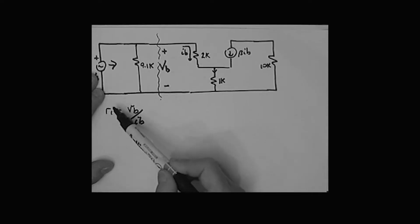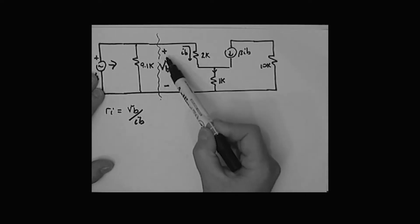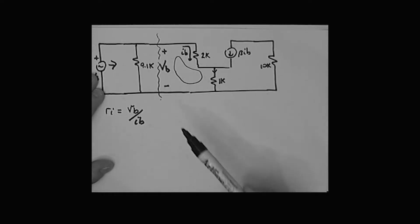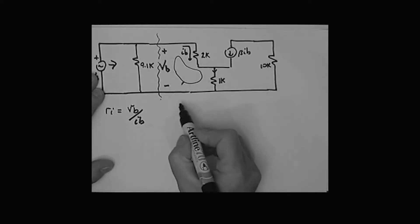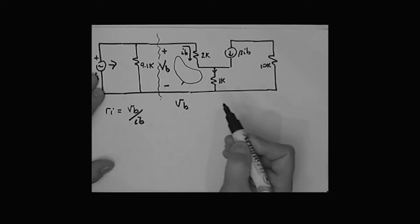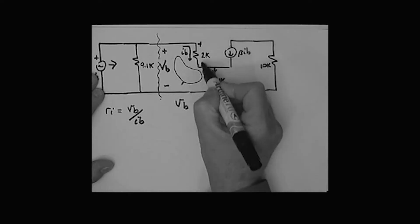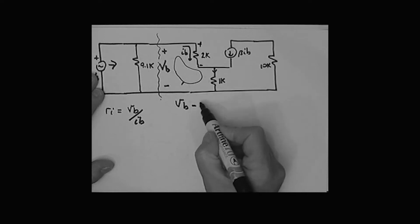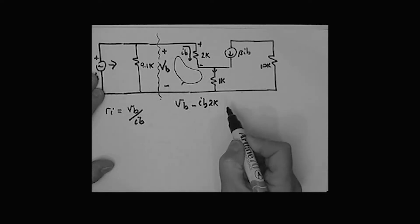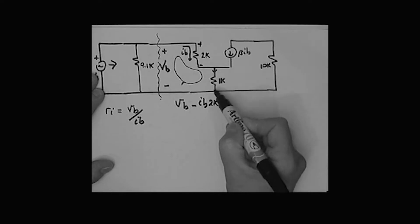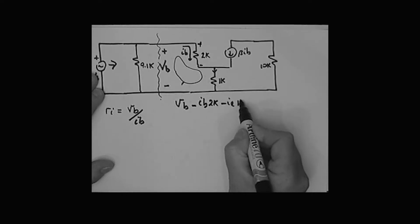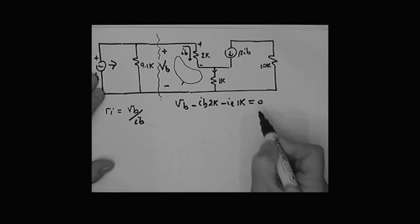To find r_i, I'll take a loop. Starting here, going from minus to plus I have voltage V_B, then a drop of minus I_B times 2k, then the drop across the emitter resistor with current I_E, so minus I_E times 1k, and all of that equals zero.